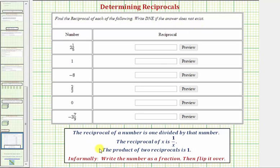The definition of the reciprocal is given below. The reciprocal of a number is one divided by that number, so the reciprocal of x is one over x or one divided by x. It's also true the product of two reciprocals is always one. But in reality, the easiest way to find the reciprocal of a number is to write the number as a fraction and then flip it over, meaning make the numerator the denominator and the denominator the numerator.